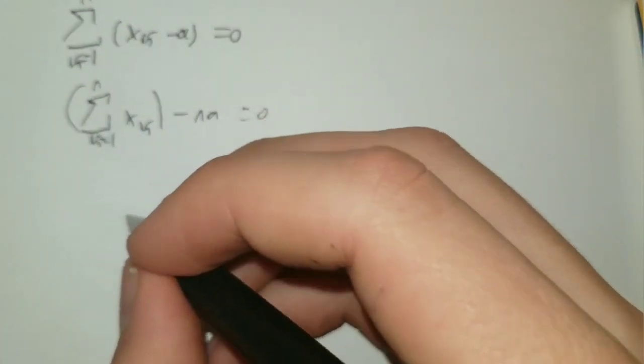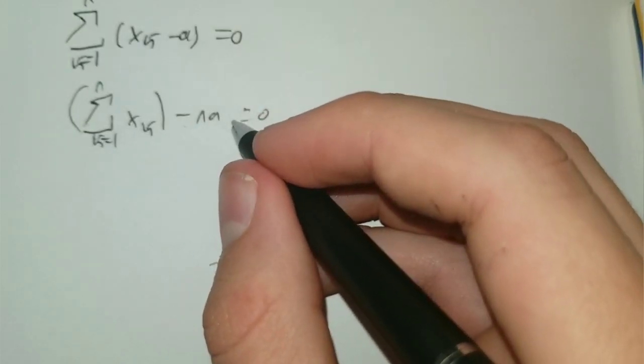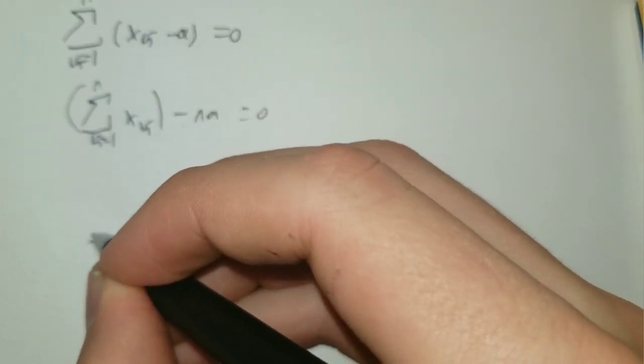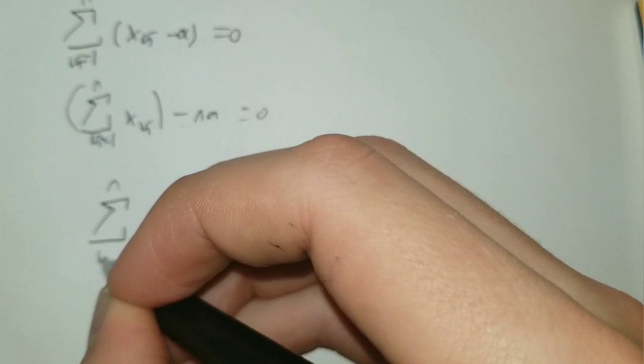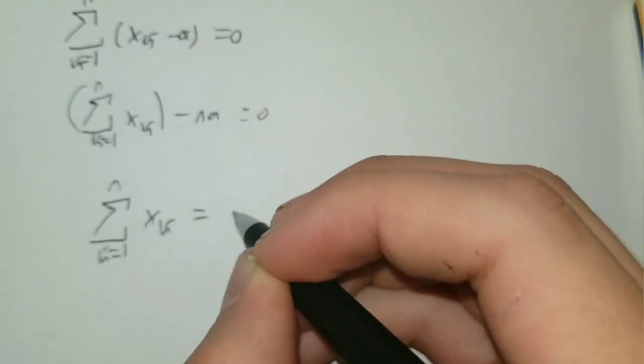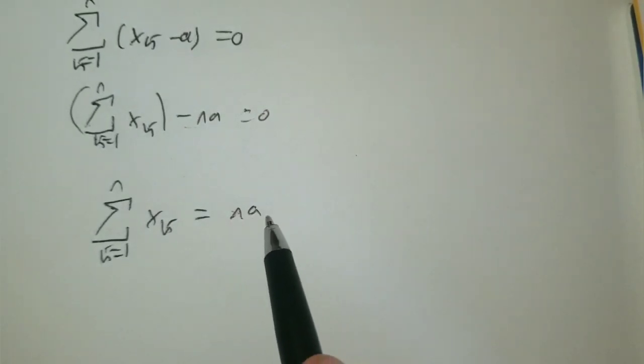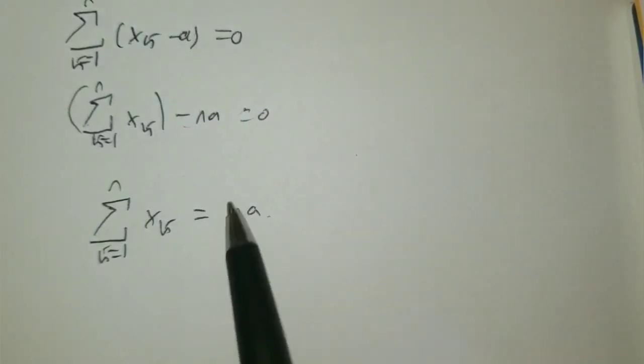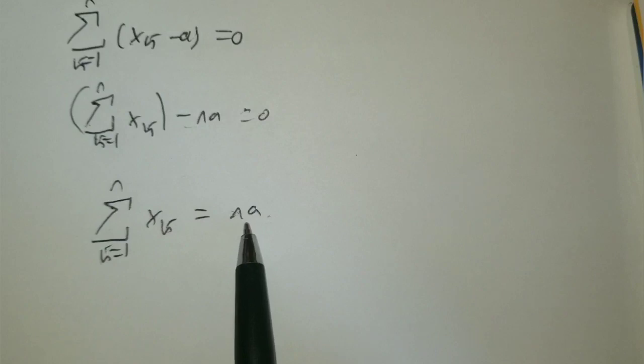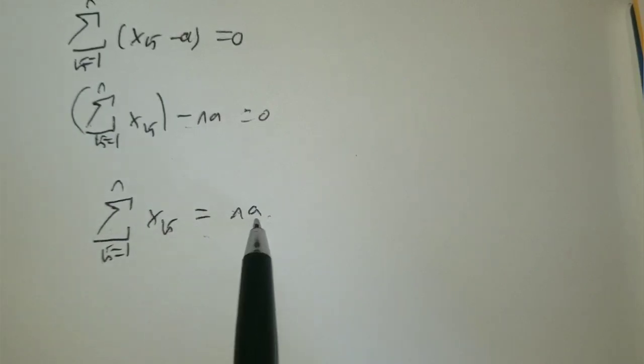Now thereby if we add na, the sum of xk is equal to na. And a is previously defined as the average, so we want to divide by n here.